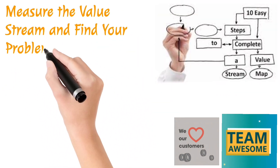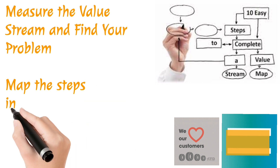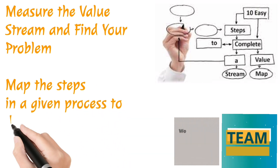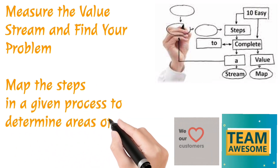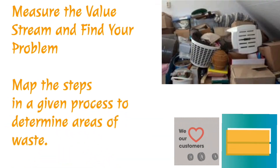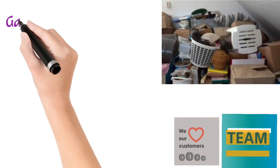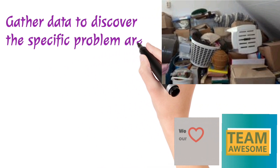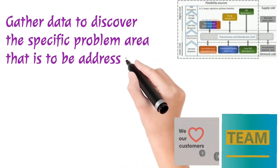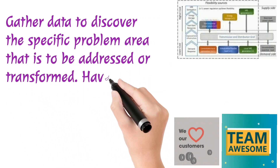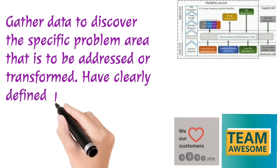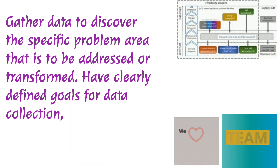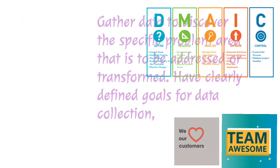Measure the value stream and find your problem. Map the steps in a given process to determine areas of waste. Gather data to discover the specific problem area that is to be addressed or transformed, and have clearly defined goals for data collection.